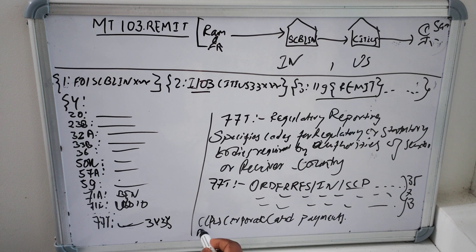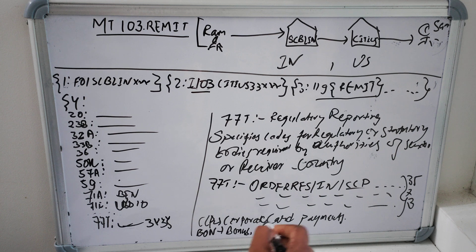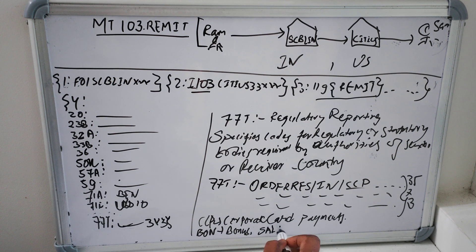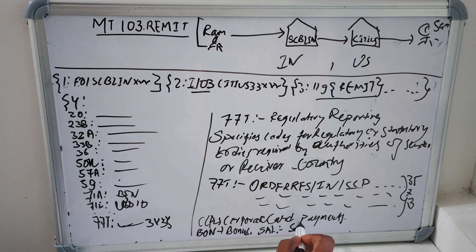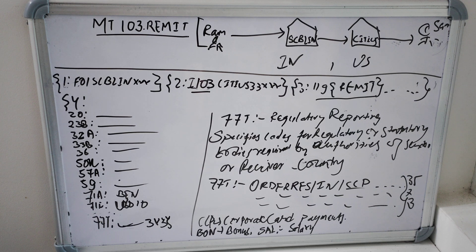There are like so many other purpose codes and taxes and fees they can use. For example, CCP is a corporate card payment, if it is a bonus let's say if it is bonus it will be BON, if it is let's say salary then SAL, so this is salary. And so on there are like so many more than 50 purpose codes available for the 77T. So this is all about the MT 103 remit and thank you for watching this video.